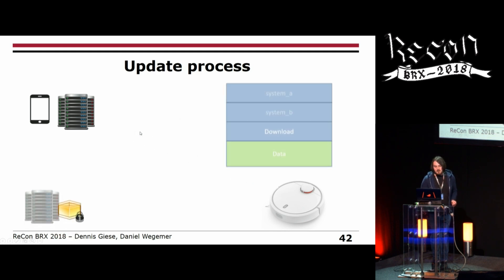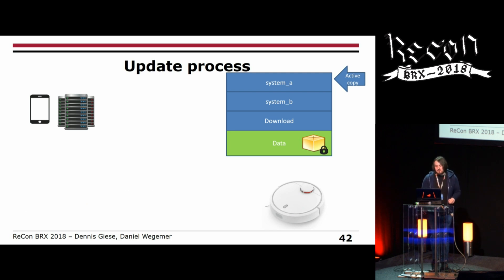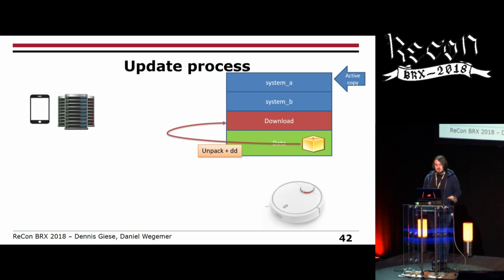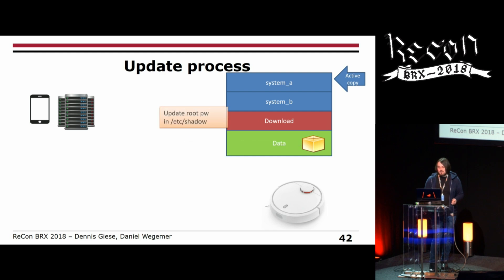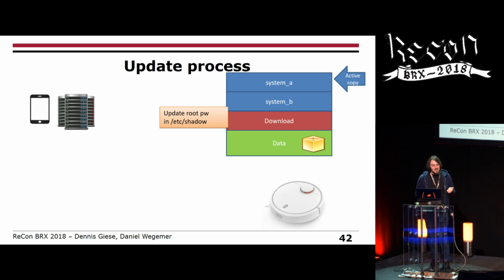The vacuum cleaner downloads the encrypted firmware from the server. First it checks the MD5 sum of the package against the one from the update command. If it matches, it decrypts the image and unpacks it to the download partition. Then it updates the root password in the /etc/shadow file from the firmware update — so you cannot hardcode a password. Every vacuum cleaner has its own root password.